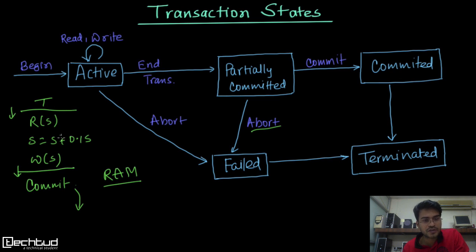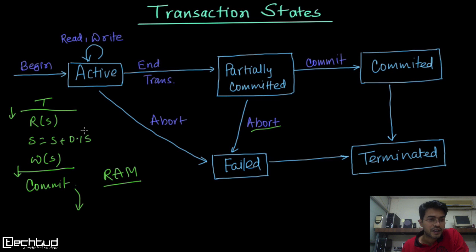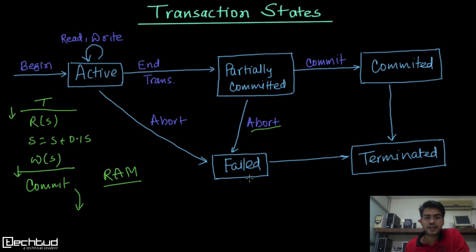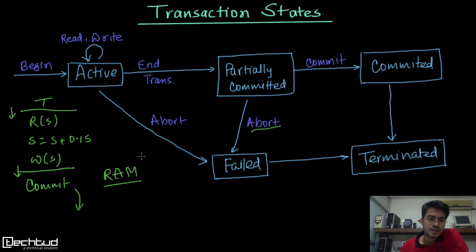Similarly, while operations are running in the active stage, the DBMS or system can realize the transaction can no longer proceed, so it can also be aborted from the active stage, moving directly to the failed stage.